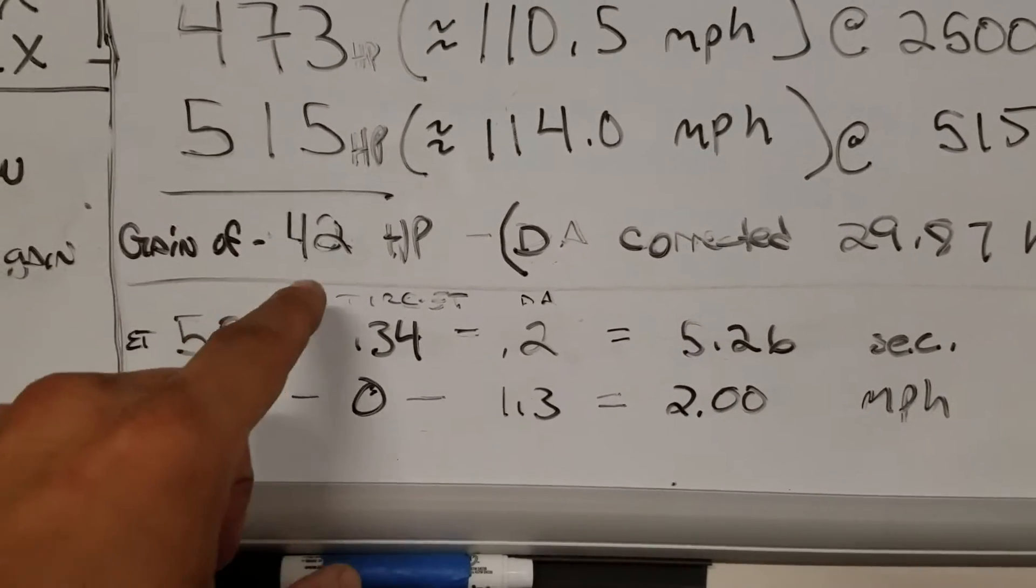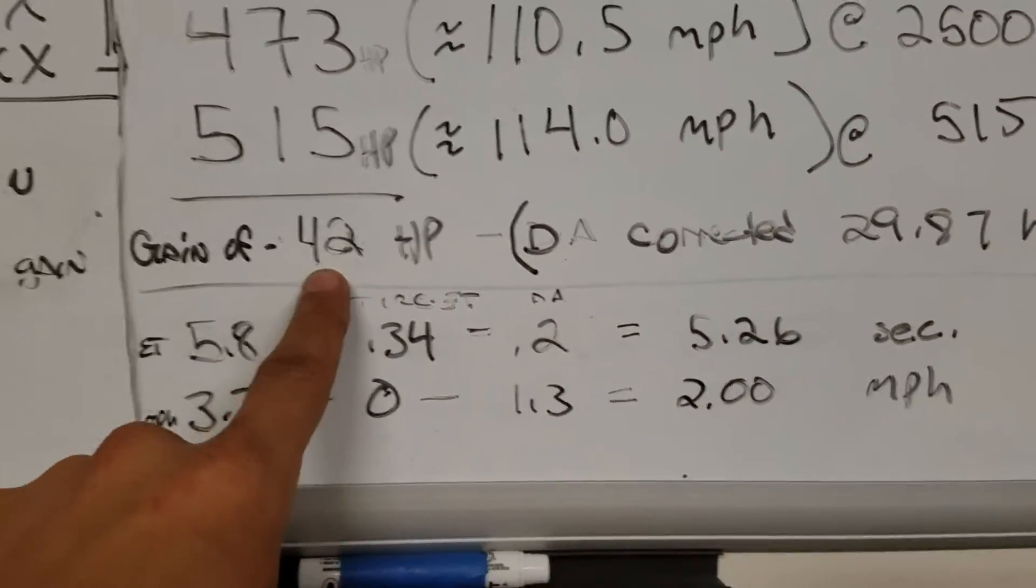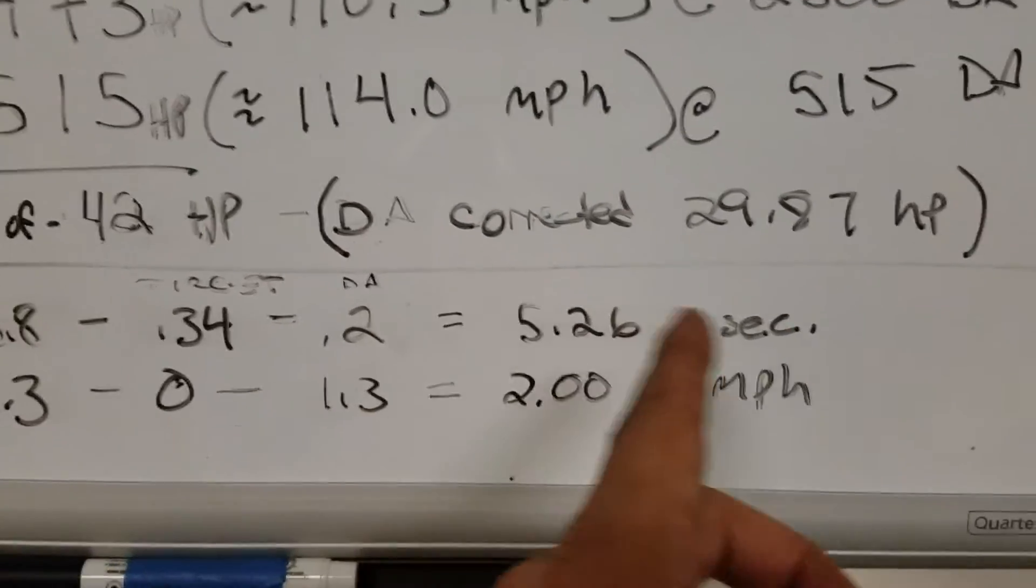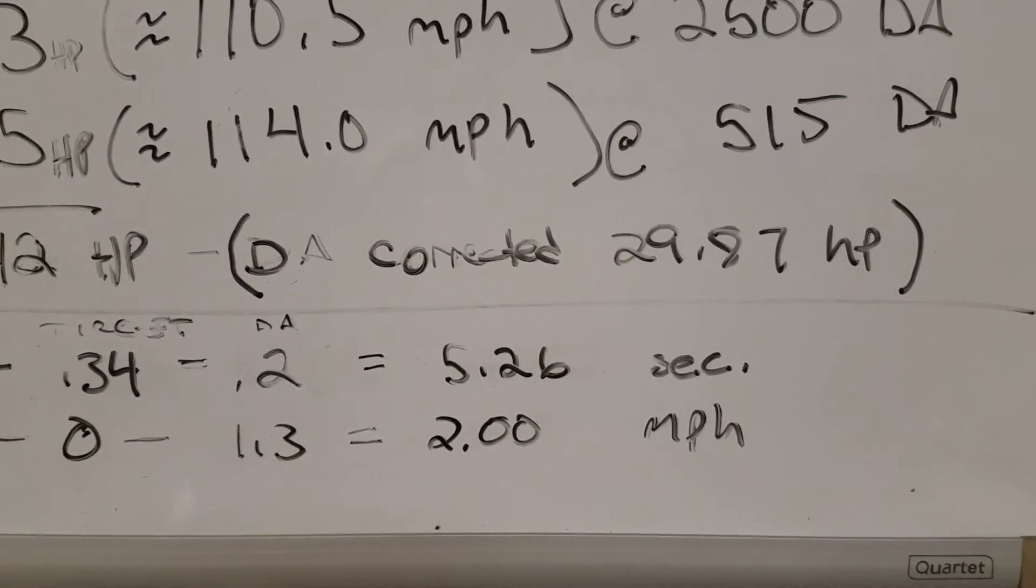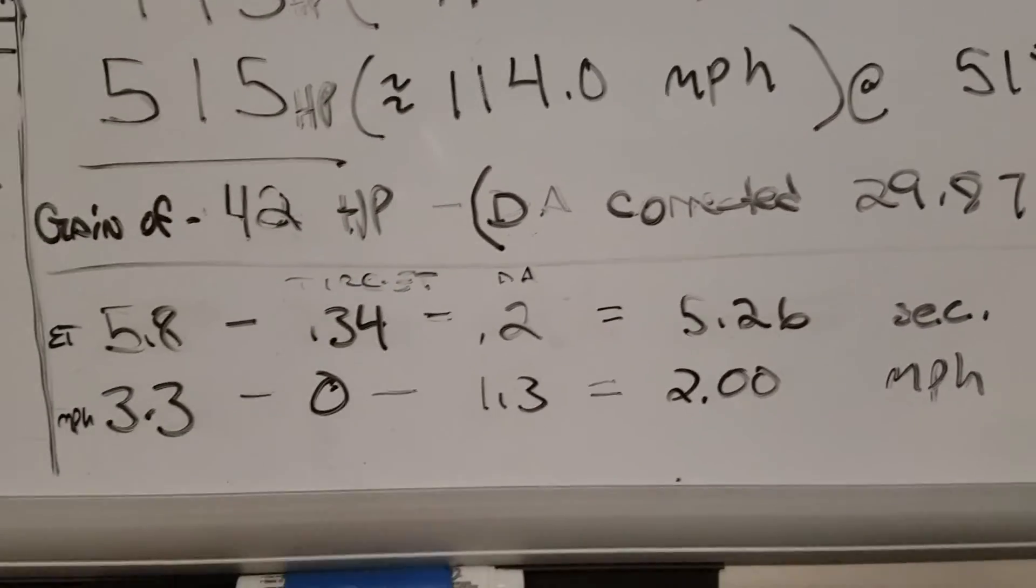Now, uncorrected, that's going to give you about 42 horsepower in total gain. But if you throw a little DA correction at it, I'm going to say it's probably close, a little bit closer to that about 29, 30 horsepower range somewhere in there.